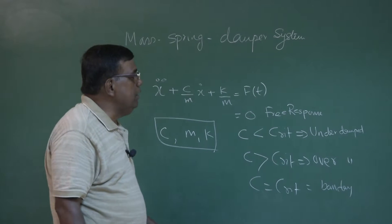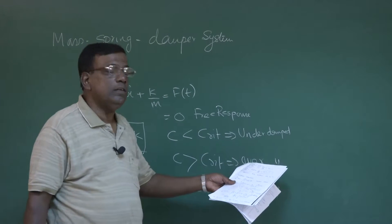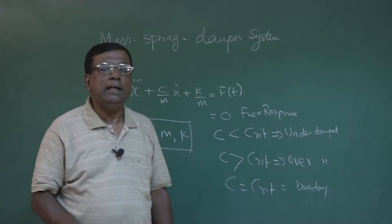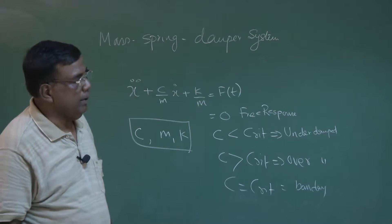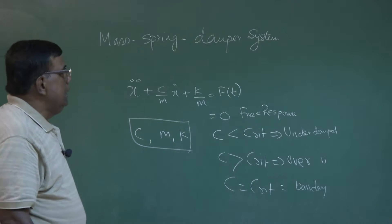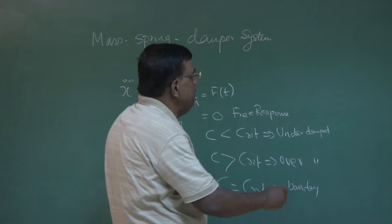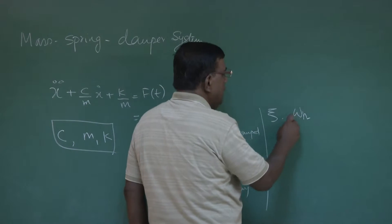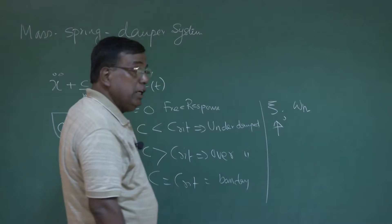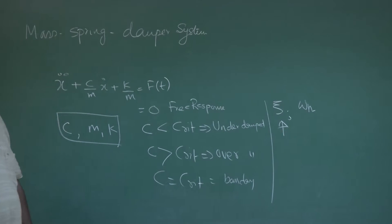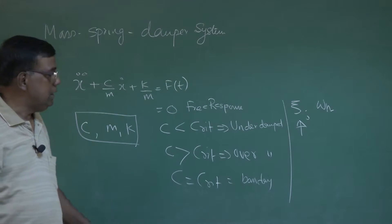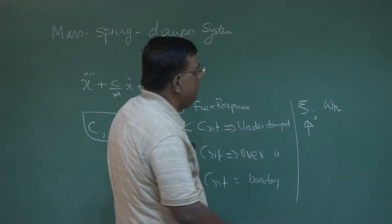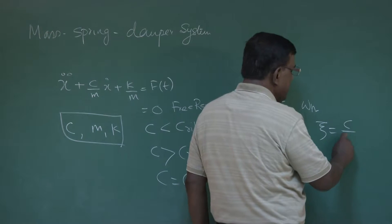If it is the over-damped case, there would not be any oscillation. If it is the under-damped case, there will be oscillation and it will take some time to come back to equilibrium. To understand this, we define two important quantities: zeta and omega_n. Zeta is the damping ratio — it is the ratio of actual damping c divided by c critical. So zeta equals c divided by c critical.